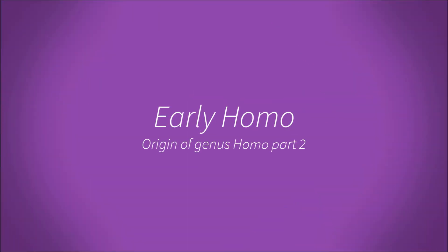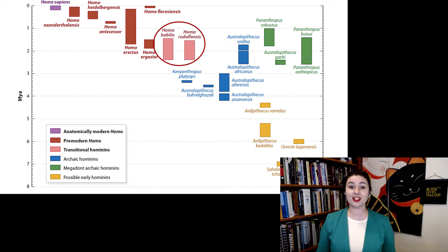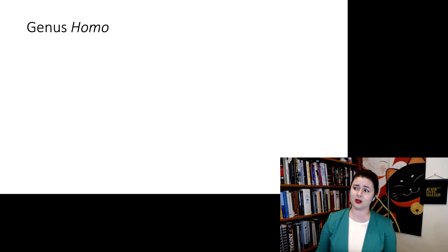Let's talk about the various earliest members of our own genus, the genus Homo. We're here talking about early members of the genus Homo. If we want to look on our tree, we're talking about these species, primarily Homo habilis and Homo rudolfensis. But first, let's talk about what it even means to put a species in the genus Homo — what are the characteristics we're looking for if we want to call it Homo rather than Australopithecus?